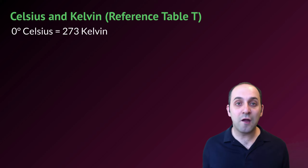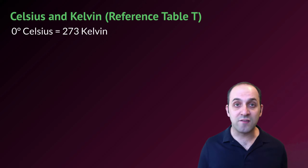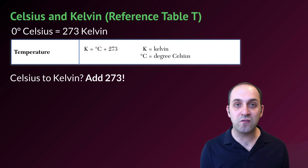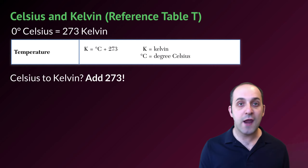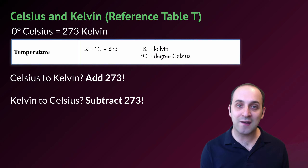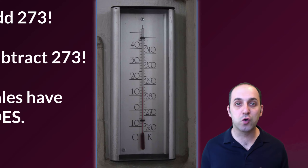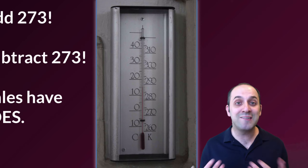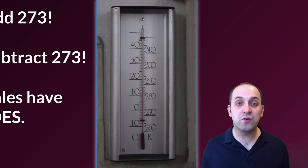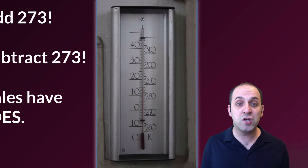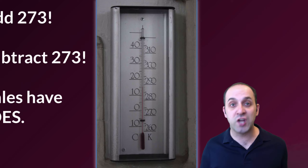Celsius and Kelvin are very closely related and you're going to need to be able to convert between them. Zero degrees Celsius is defined as 273 degrees Kelvin. That formula is given to you on reference table T. In order to go from Celsius to Kelvin, you just add 273. In order to go from Kelvin to Celsius, you subtract 273. One thing to understand is that the magnitude of degrees in both scales are the same size — so a change by X degrees Kelvin equals a change by X degrees Celsius.